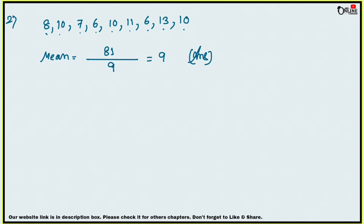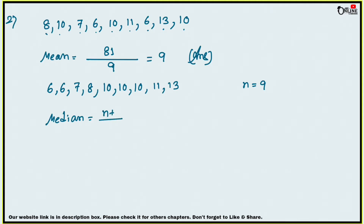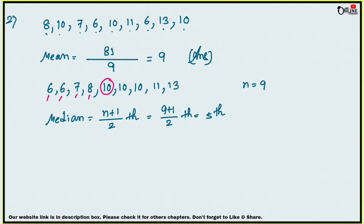To find the median, first write the numbers in ascending order: 6, 6, 7, 8, 10, 10, 10, 11, 13. There are 9 numbers, so n is odd. The formula for median when n is odd is the (n+1)/2 th term, which is the (9+1)/2 = 5th term.